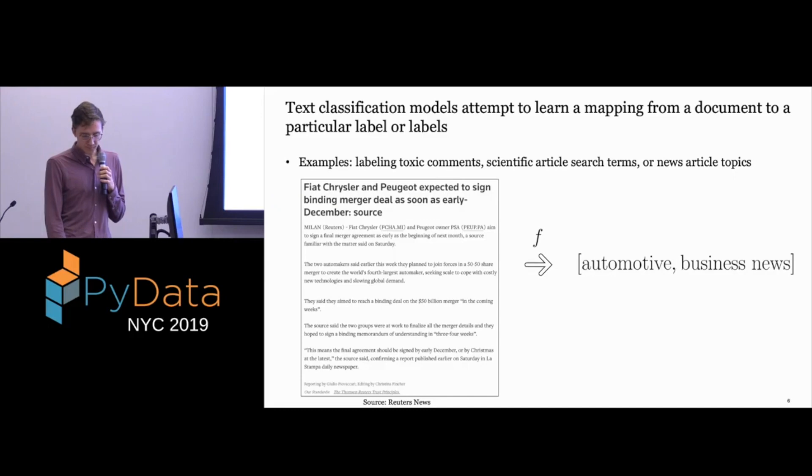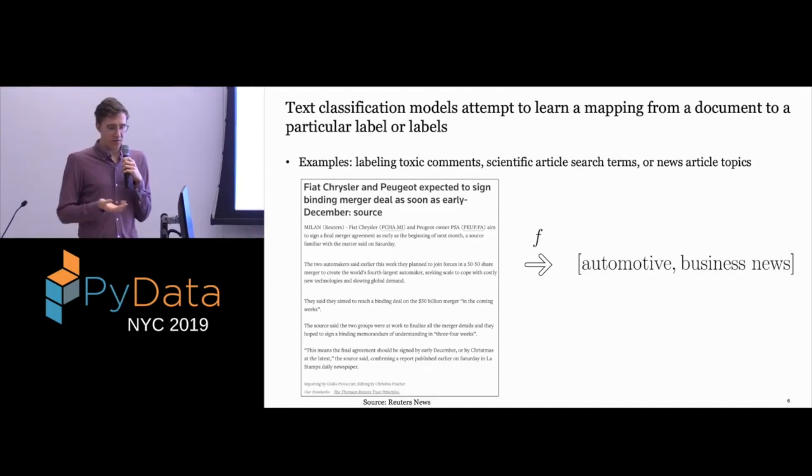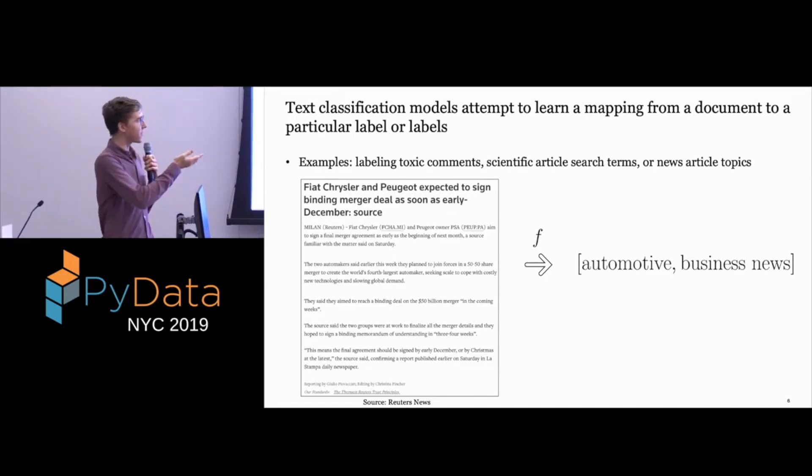So what is text classification? Hopefully everyone knows, but if you don't, this is basically learning this mapping F from a document to a particular label or multiple labels. Examples would be labeling what kind of abuse a toxic comment is giving, applying search terms to scientific articles, or applying topics to news articles. So this is an example. This is a Reuters news article. Fiat Chrysler is signing some kind of merger, so you would want to apply the labels automotive and business news to this. Basically, you're just caring about this function F.